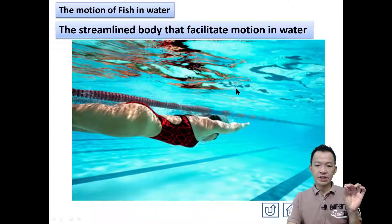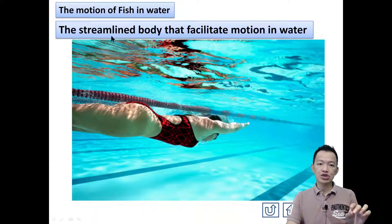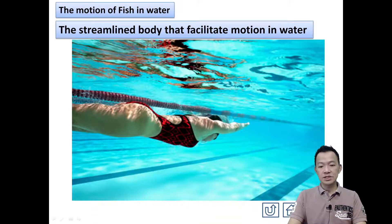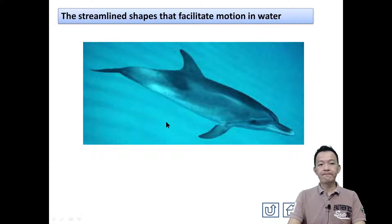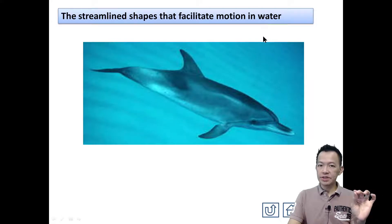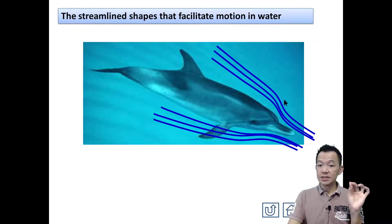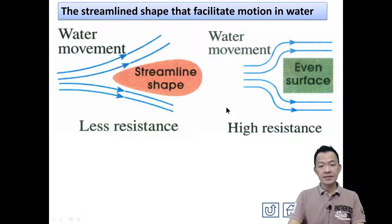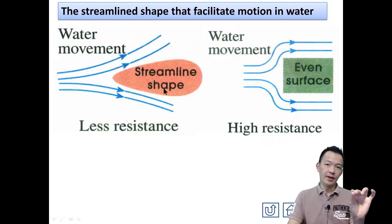Besides this, all fish have a streamline body. What does streamline body mean? It is a body shaped like a water droplet — that kind of shape. The streamline body facilitates motion in the water by reducing resistance, allowing the fish to move very fast in the water.